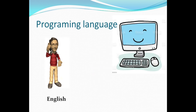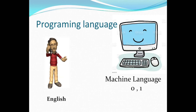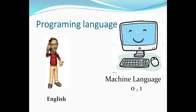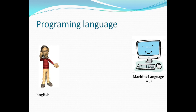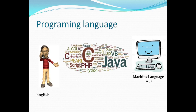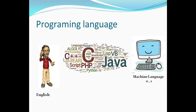This concept we are applying to programming language. In programming language, the English-speaking man knows only English, but the computer knows only zeros and ones — exactly machine language. If the English-speaking man and the machine want to share something, he has to convey whatever he wants in machine language. But he doesn't know machine language, so he has to use an intermediator to convert English into machine language. That intermediator is called a programming language.